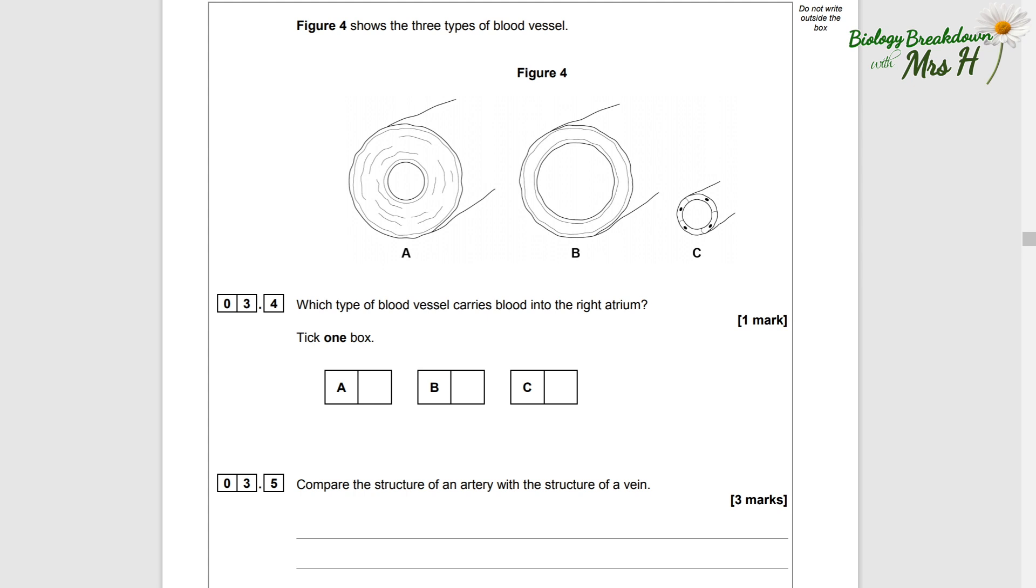Figure four shows three types of blood vessels A, B, C. Which type of blood vessel carries blood into the right atrium? Into the right atrium - atrium is part of the heart, and it's going in, so we know a vein carries blood into the heart.